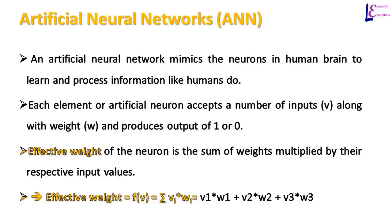In artificial intelligence, an artificial neural network mimics the neurons in the human brain to learn and process information like humans do. Each element or artificial neuron accepts a number of inputs along with weights and produces an output of 1 or 0. The purpose of weight is to change the input signal according to our will, and this is how a neuron is trained to learn from various inputs. The effective weight is the sum of the products of weights and their respective inputs, and it determines whether the output from a neural network should be high or low.